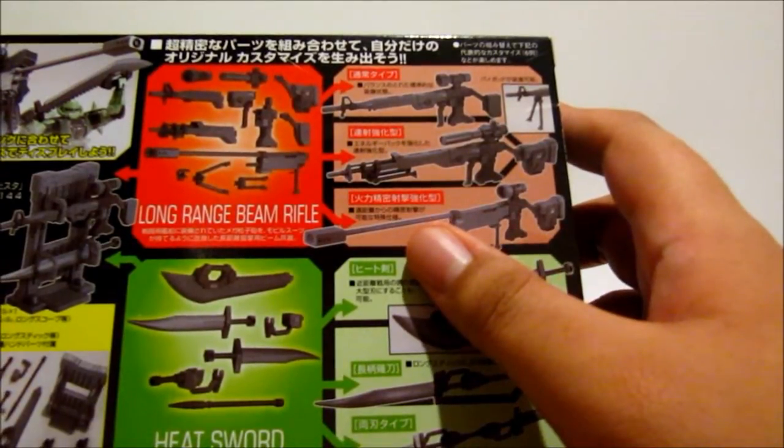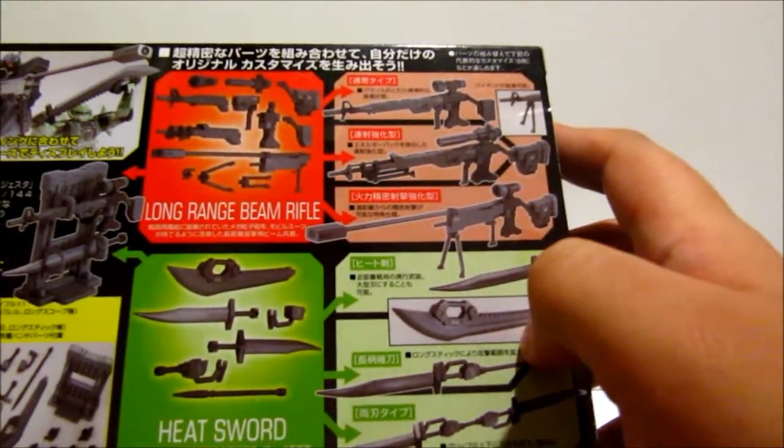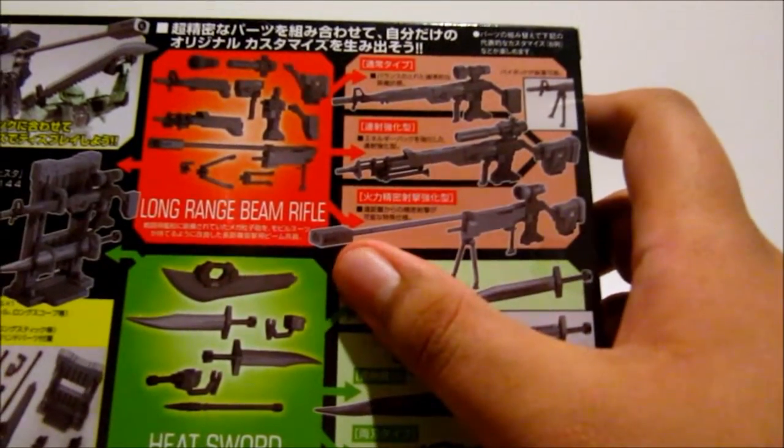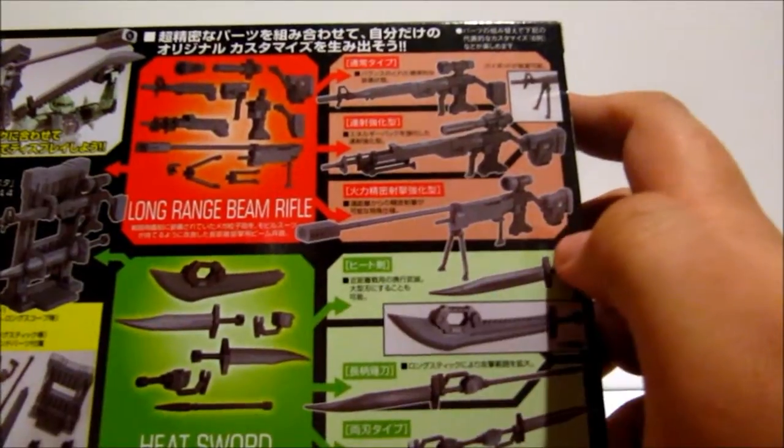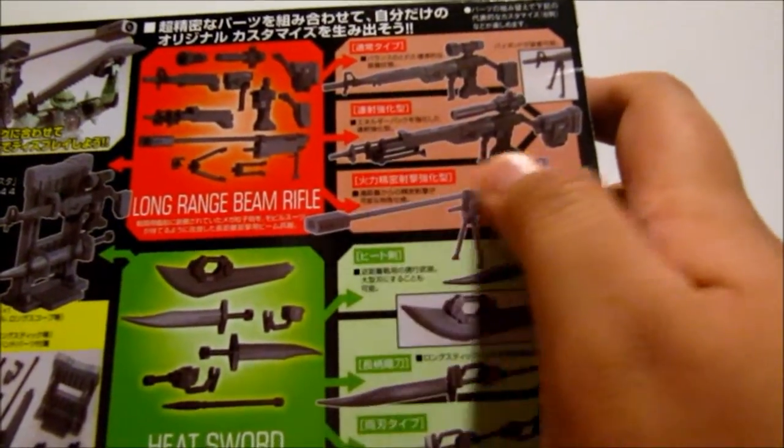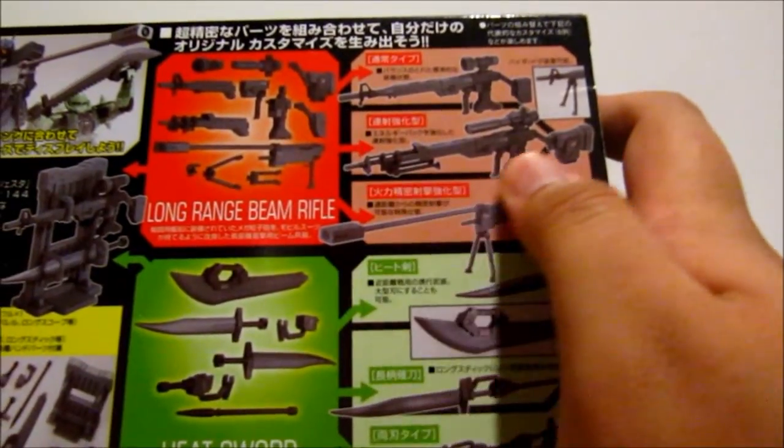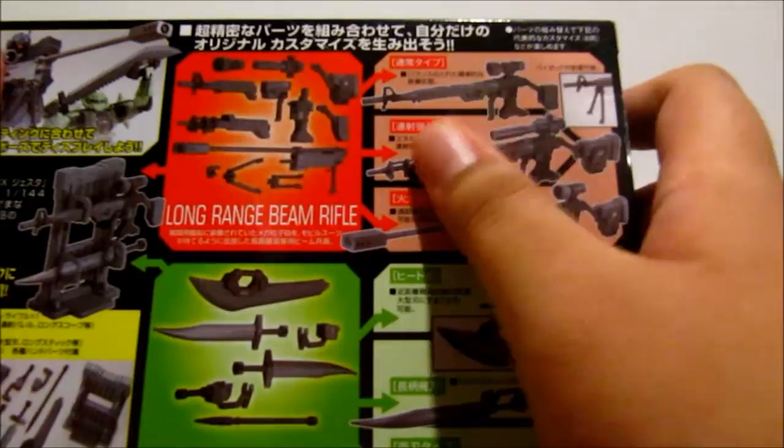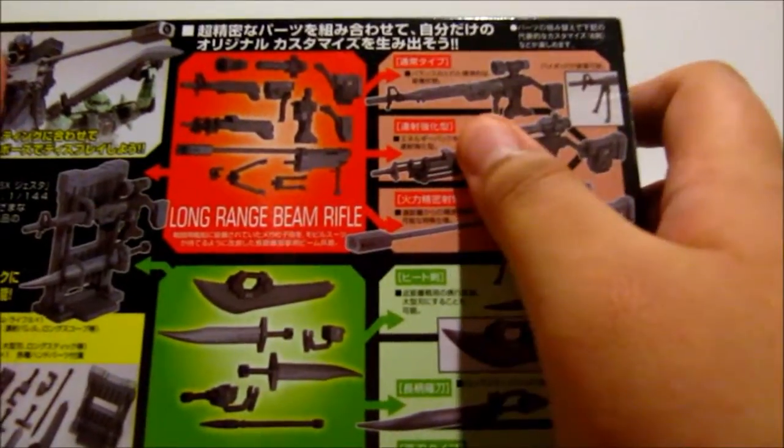Out of the parts you can make one of three Beam Rifles. You can make this very skinny barreled Beam Rifle or you can go with a Beam Rifle that looks more like the Sniper Rifle these days or you can go with the GM Beam Rifle.